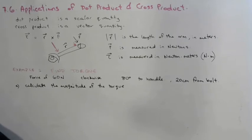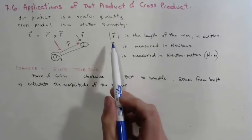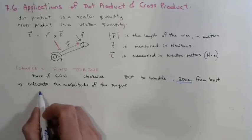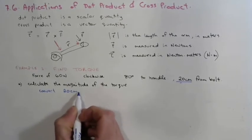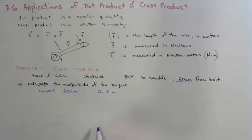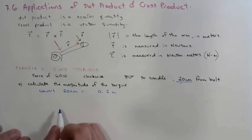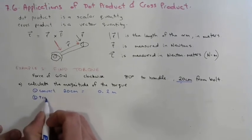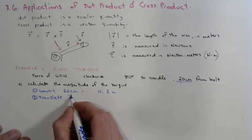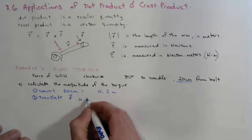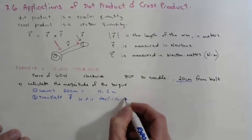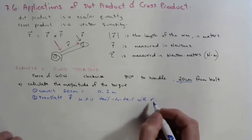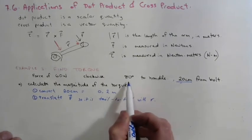First, we convert the distance: 20 centimeters equals 0.2 meters. Then we translate vector F so it is tail to tail with R. The angle between them is 80 degrees. So we draw the wrench at 0.2 meters with the 60-newton force tail to tail, and the angle between them is 80 degrees.